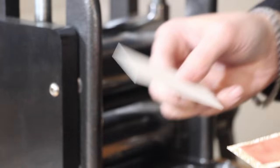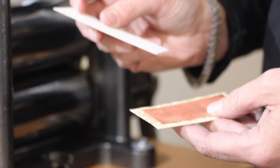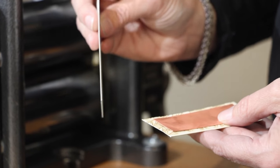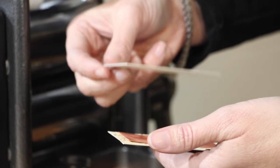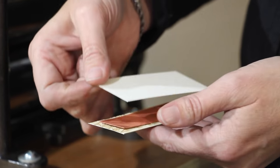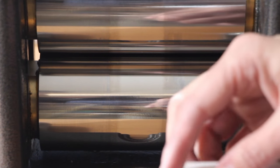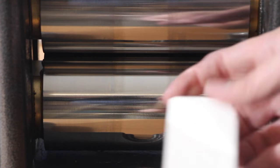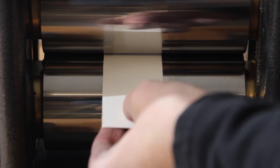Then I take a piece of 140 pound watercolor paper. This is that nice thick paper that people like to paint with and I make a sandwich. It doesn't matter where as long as it goes texture, metal, watercolor paper. The watercolor paper can be on the top or the bottom, it doesn't matter. And then I'm ready to feed my sandwich into the rolling mill.